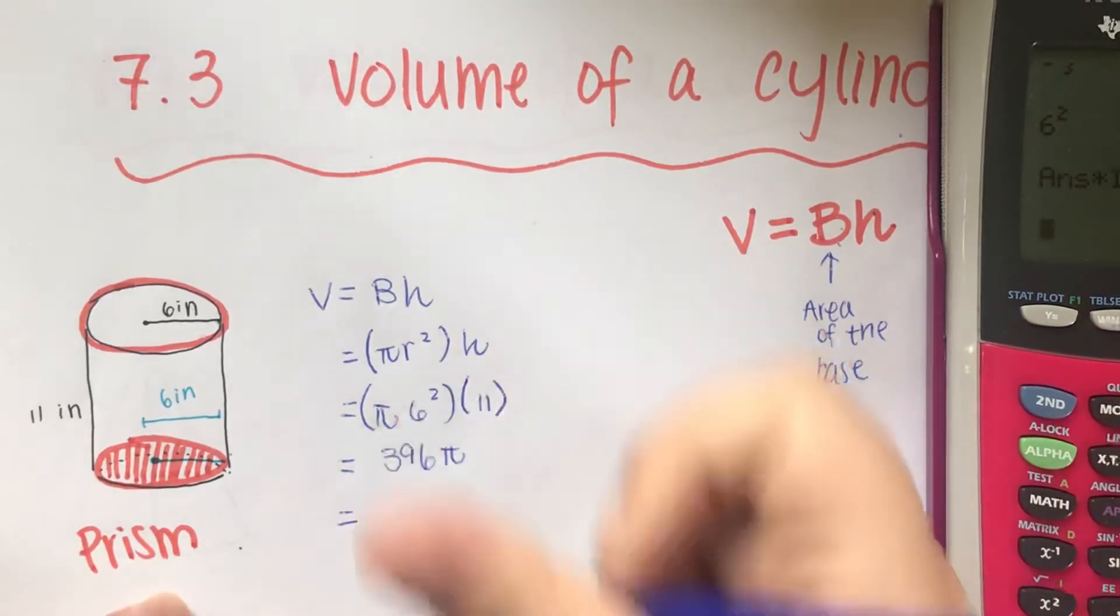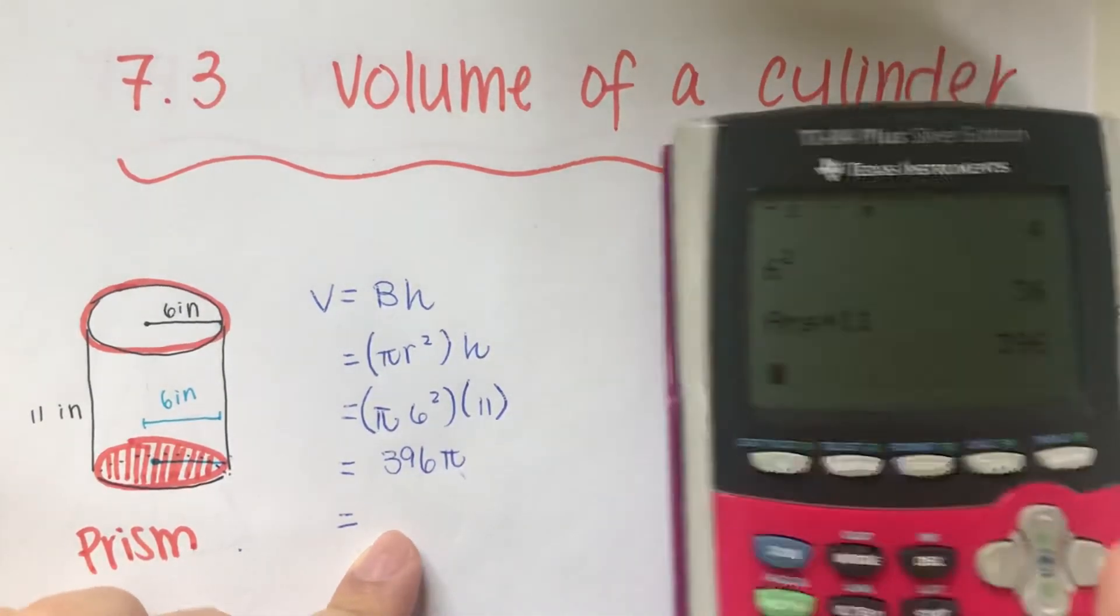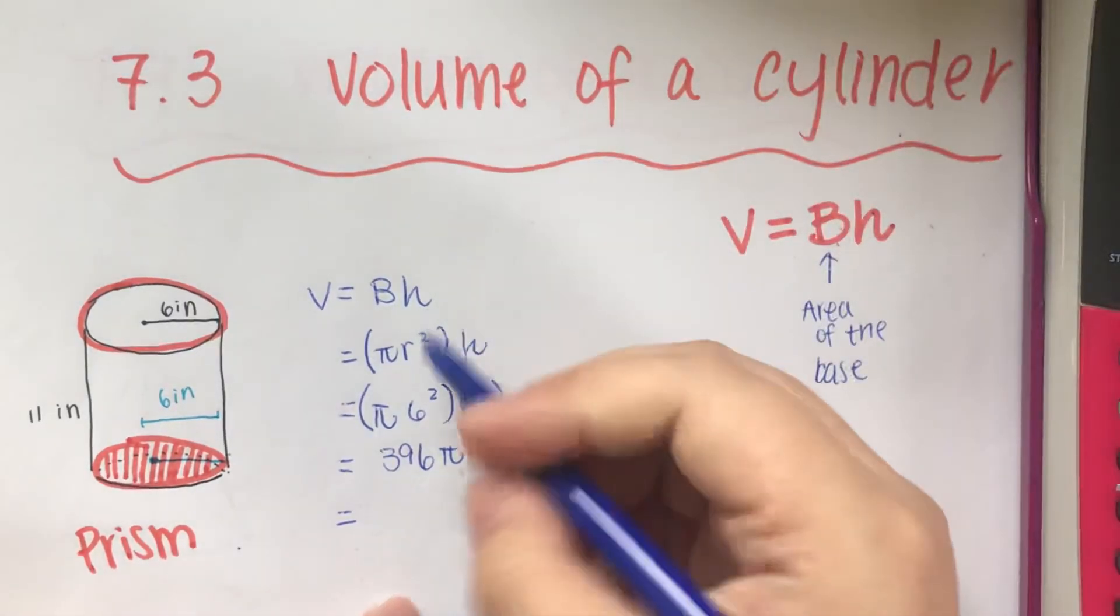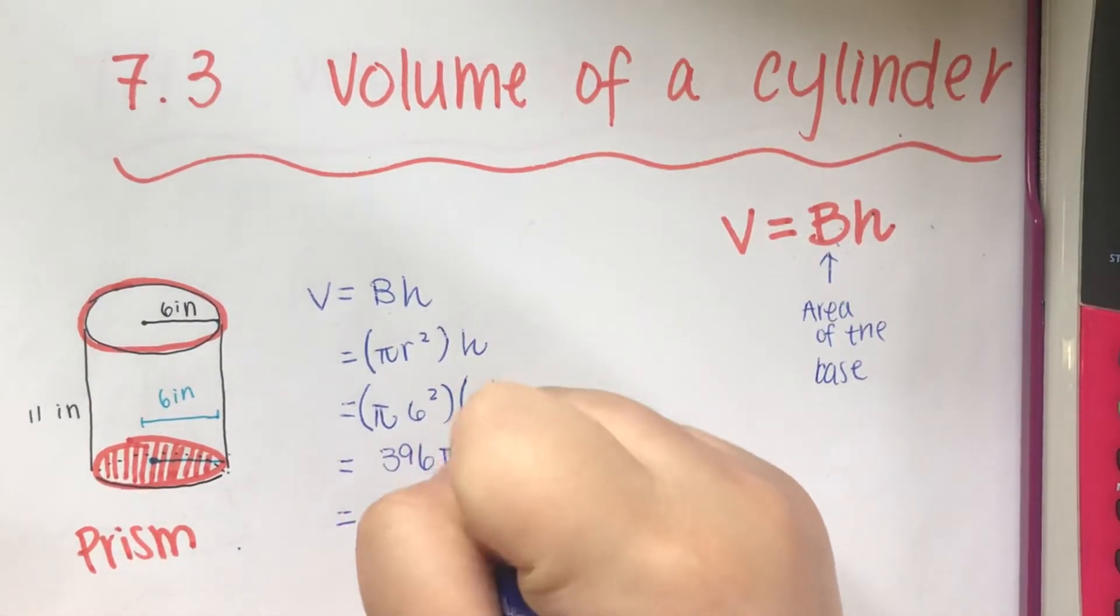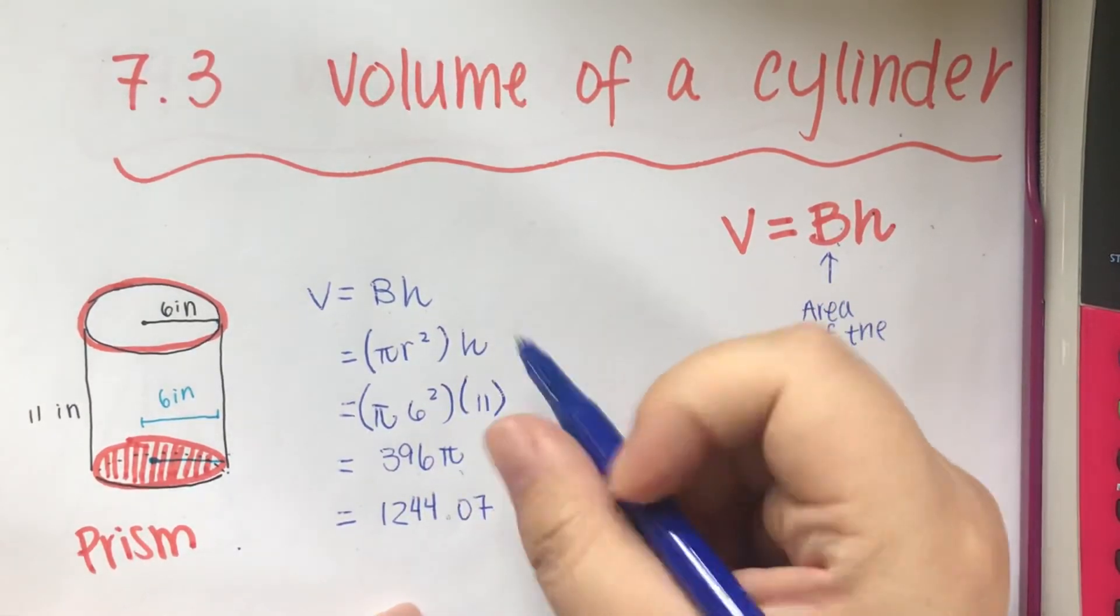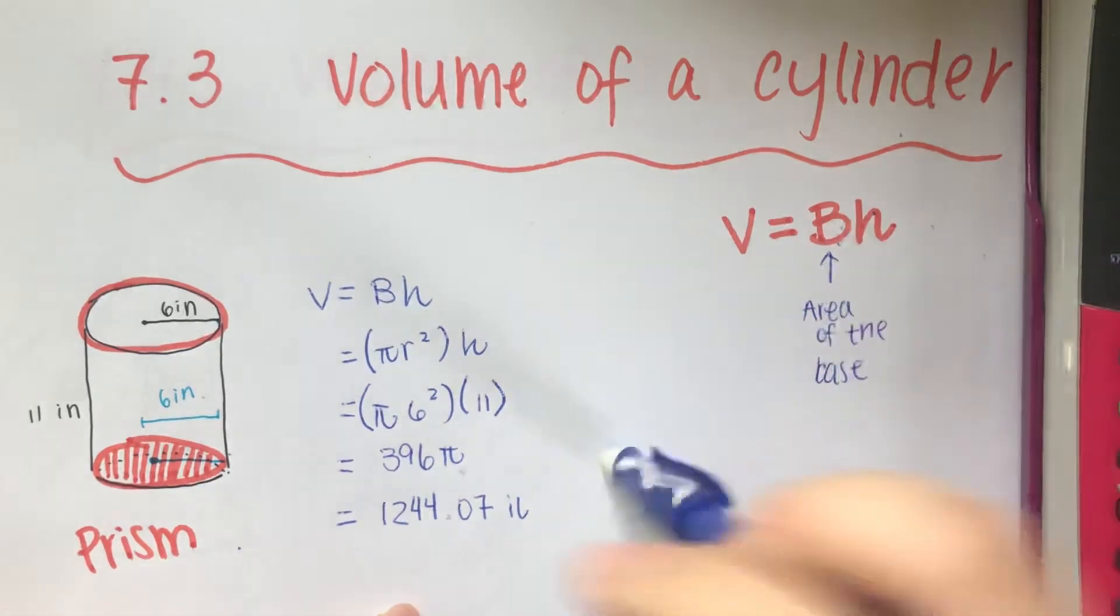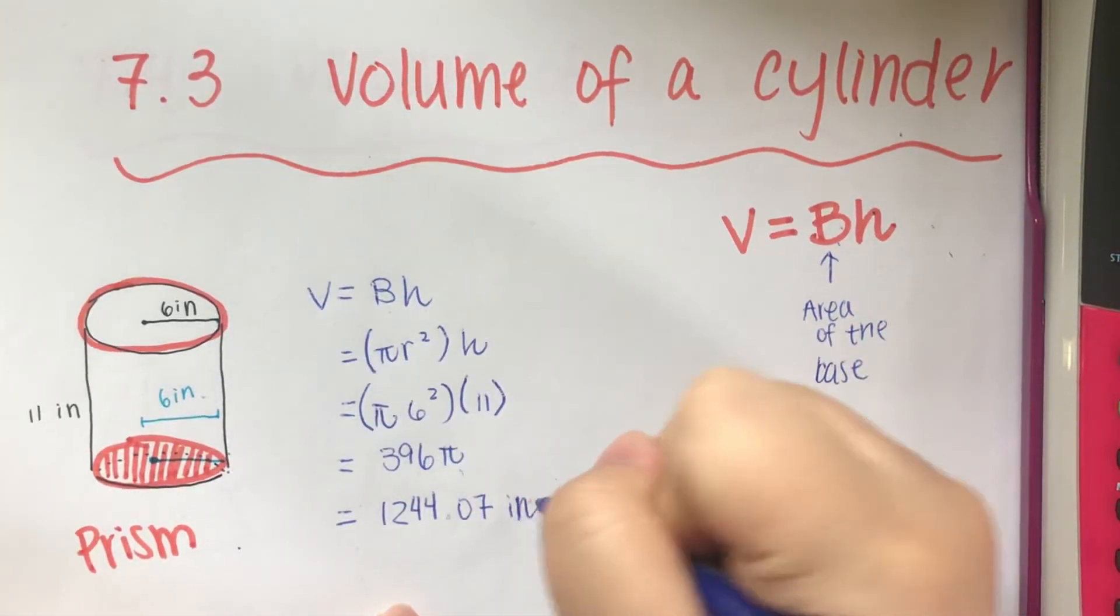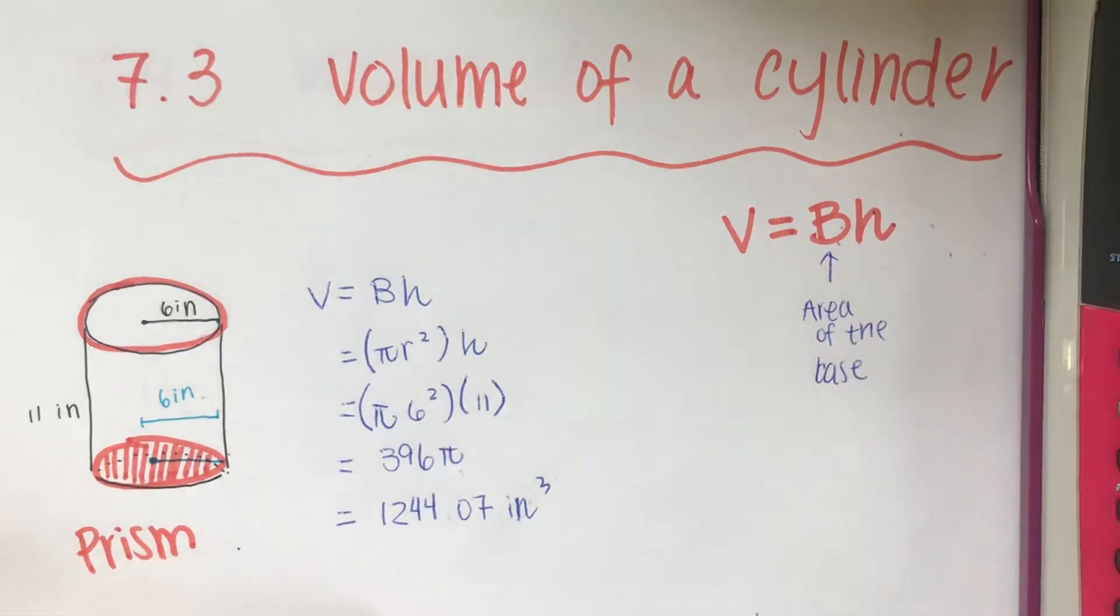It's going to be 396π. If they tell you to leave it in π, you can leave it in terms of π, but if they didn't and you want to put it in decimal form, that's also fine. So we multiply by π, it turns out to be 1244.07 inches. Since we're talking about volume, it's cubic inches.